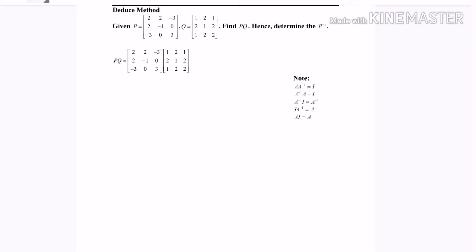So here P multiply Q with the help of the calculator, I get my answer PQ which equals 3I. For the deduce method, I'm going to multiply both sides with P inverse because the question asks us to find P inverse.